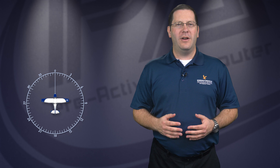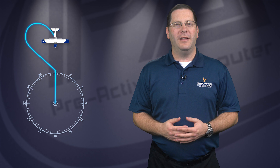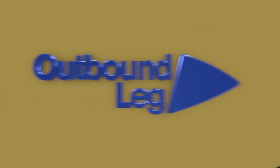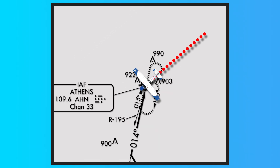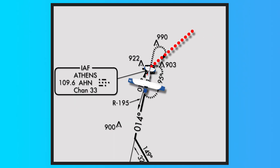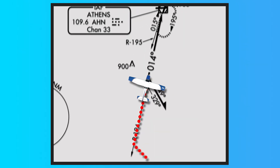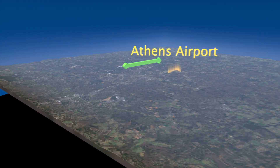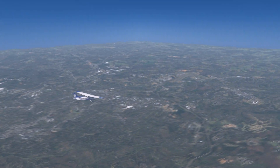VOR approaches generally consist of three overall steps: an outbound leg where you're tracking a radial away from the VOR, a procedure turn, and then an inbound leg where you're tracking a radial towards the VOR. When not receiving vectors to final, the first steps are to proceed direct to the initial approach fix and then, once cleared for the approach, track the specified radial outbound. The objective of this outbound leg is to travel a logical distance away from the initial approach fix to set up for the final approach inbound. Think of this like a traffic pattern, where you want to have a long enough downwind leg to ensure that your turn to final provides enough distance to have a stabilized descent.